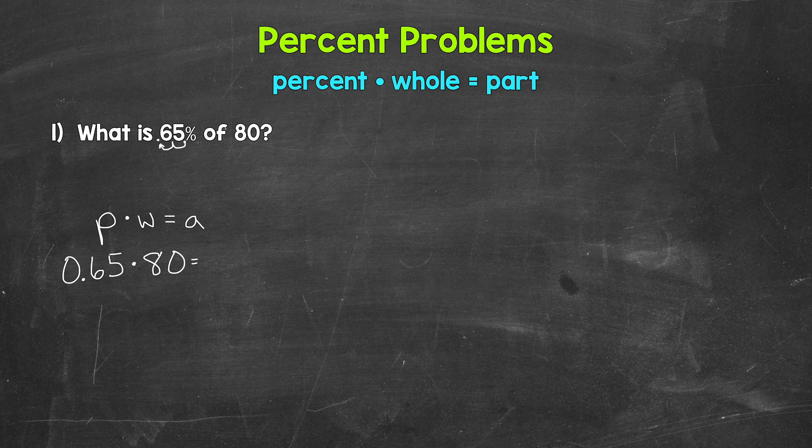Now the percent times the whole equals the part. And that's our unknown here. So we need a variable. And we're using A for part, so let's put equals A. Now as far as identifying the different parts of the equation, so figuring out the percent, the whole, and the part from the problem, what I like to do in order to keep things simple is identify the percent and the whole first by looking for the keyword of.